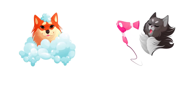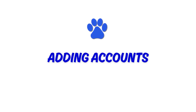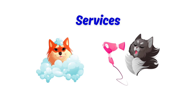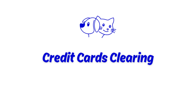They provide grooming services and occasionally sell products such as shampoo and conditioner. We'll use two existing income accounts: services for pet grooming services, and sales of product income for the sale of pet grooming products. We're going to add a credit cards clearing account, which will be used for credit card payments that have been processed and not yet deposited.